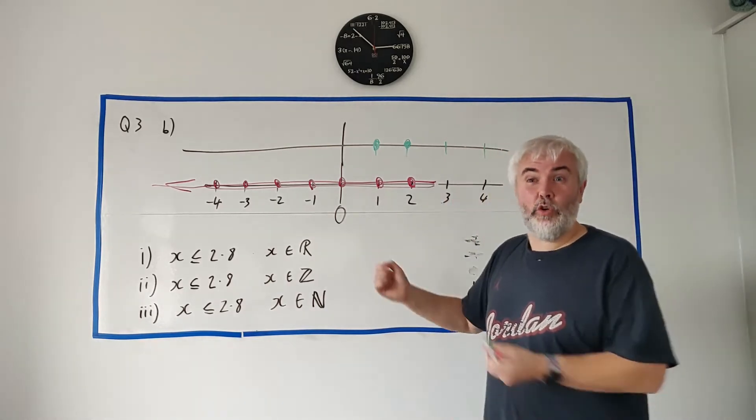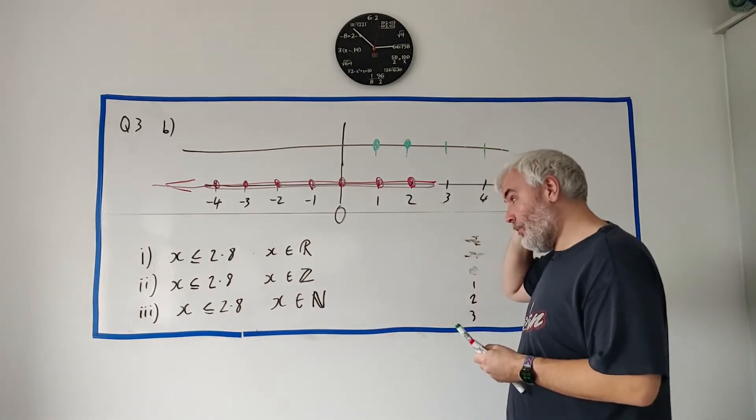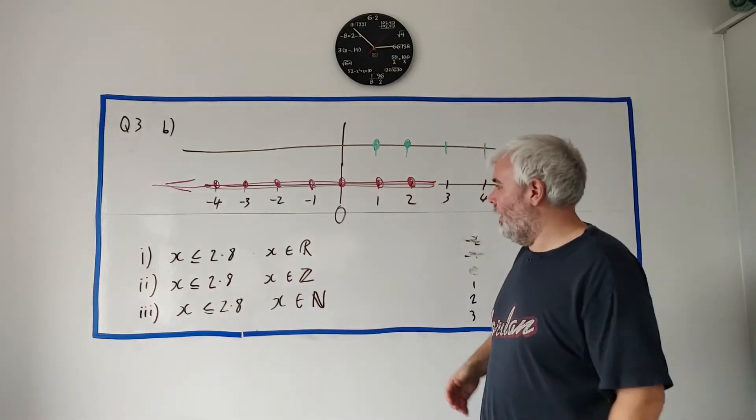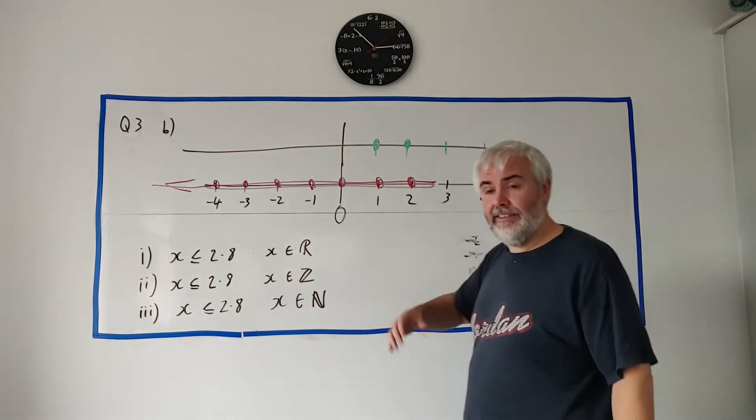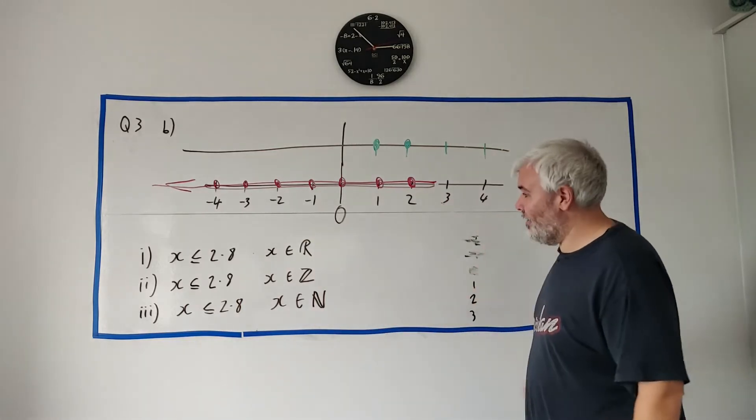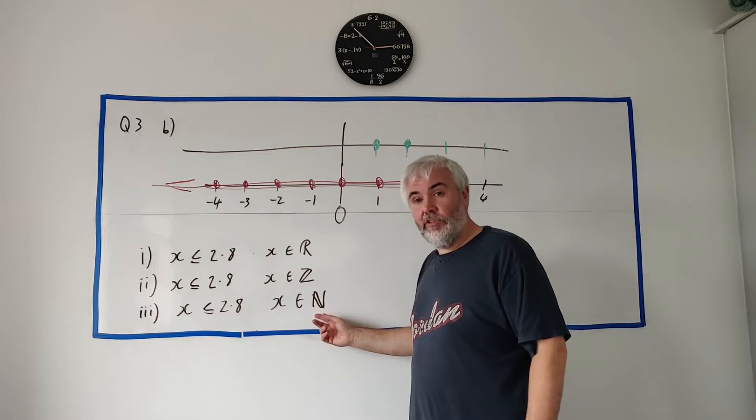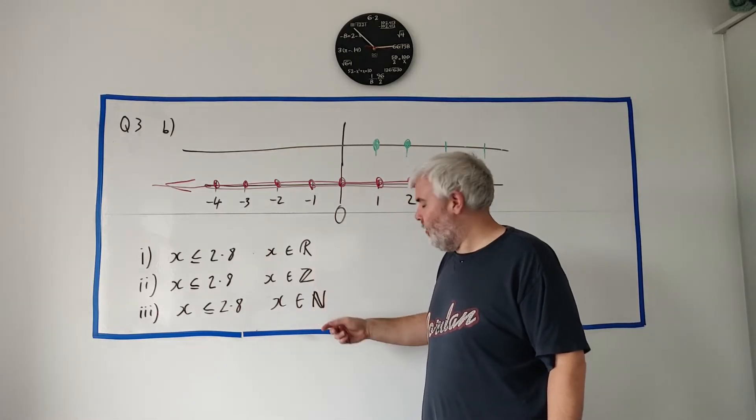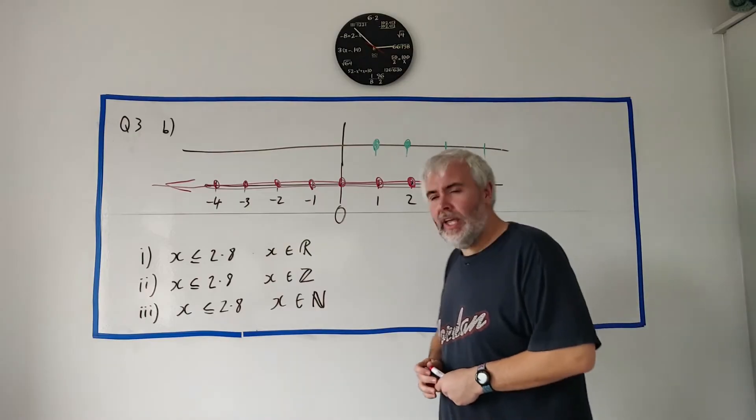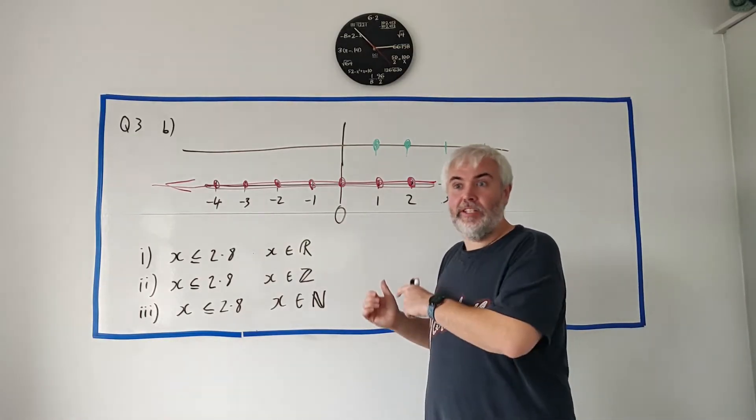They will ask you a trick question like this every exam. You need to know what the real numbers are. It's pretty much everything. It's all the whole numbers and it's fractions. Natural numbers are just the whole numbers minuses and positives. Natural numbers, sorry, integers I should have said here. Natural numbers, all the whole numbers, just the positives. Let me go on to part C.